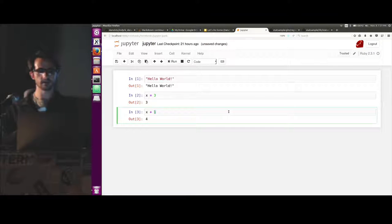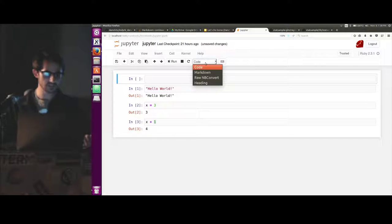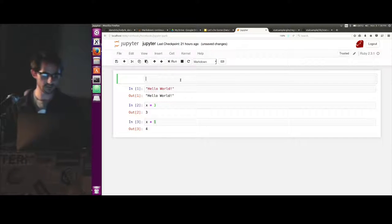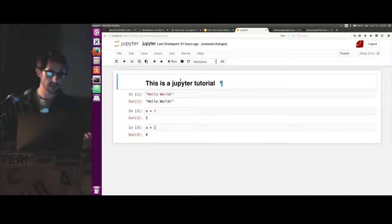The cool thing about this. So unlike IRB, this is all saved to a file. So it's just a JSON file on the back end. And you can actually do some documentation as well. So I can change the cell type to markdown and say this is a Jupyter tutorial. So you can provide markdown that describes your code. This is really useful when you're doing analytics. And you need someone to come back later and understand what you were thinking.